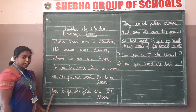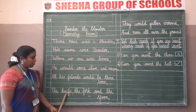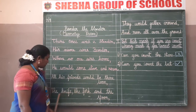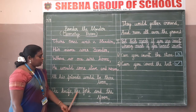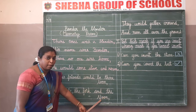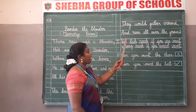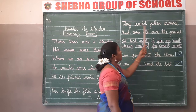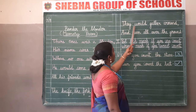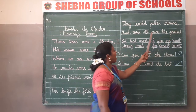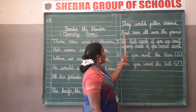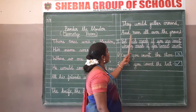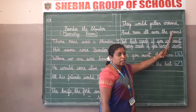Leave your line and start writing from the next line: 'The knife, the fork and the spoon', comma. Again leave your line and start writing the next line: 'They would gather around', start with a capital letter, end with a comma. Then again leave the next line and write: 'And run all over the ground', full stop.